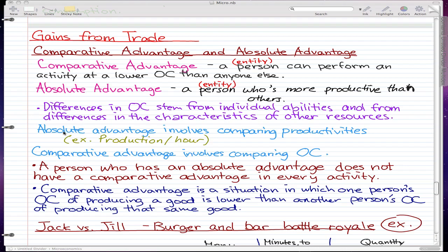Absolute advantage involves comparing productivities, for example, production per hour. Comparative advantage, on the other hand, involves comparing opportunity costs. We will discuss comparative advantage and absolute advantage more in the coming example.